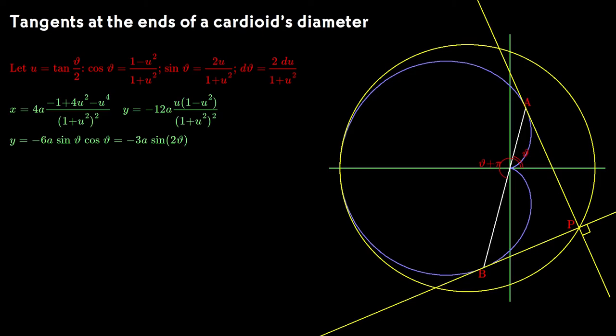I started by noticing that y factored simply into minus 3 times the double angle sine formula. x was a little bit harder to approach. I noticed the form of the function was pretty similar to cosine squared theta. Does that help? Let me use that to cancel out the u to the fourth term. And yes, that worked. The other term is 2a sine squared theta.